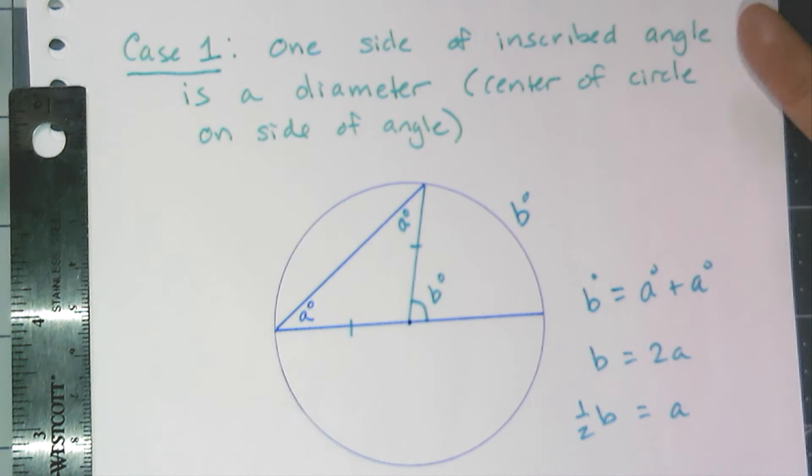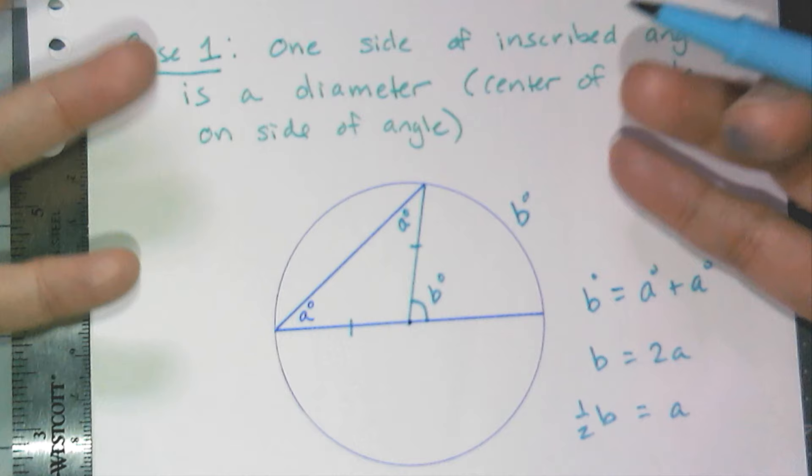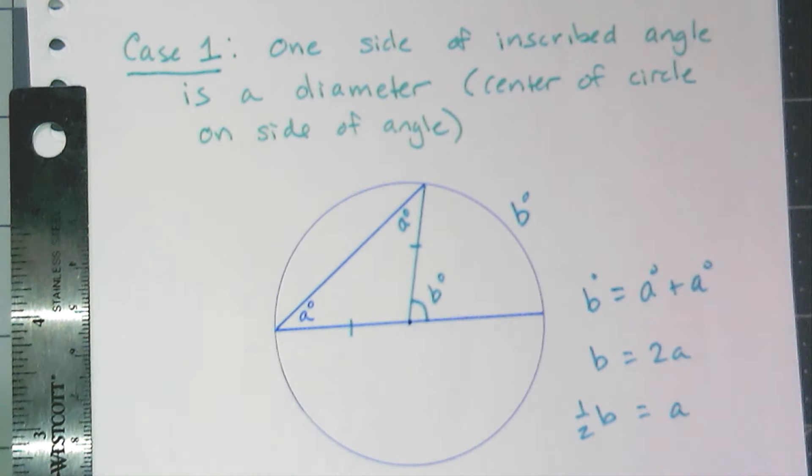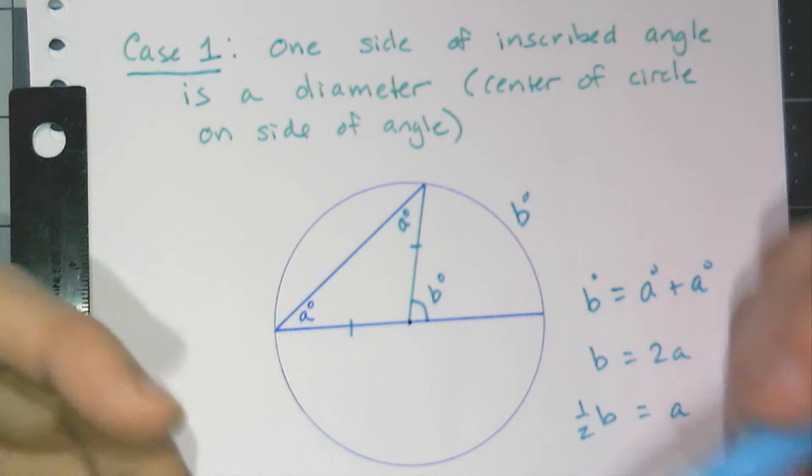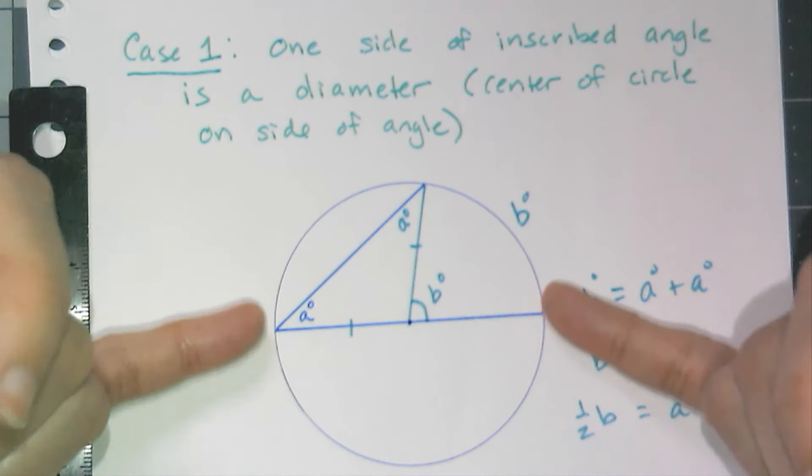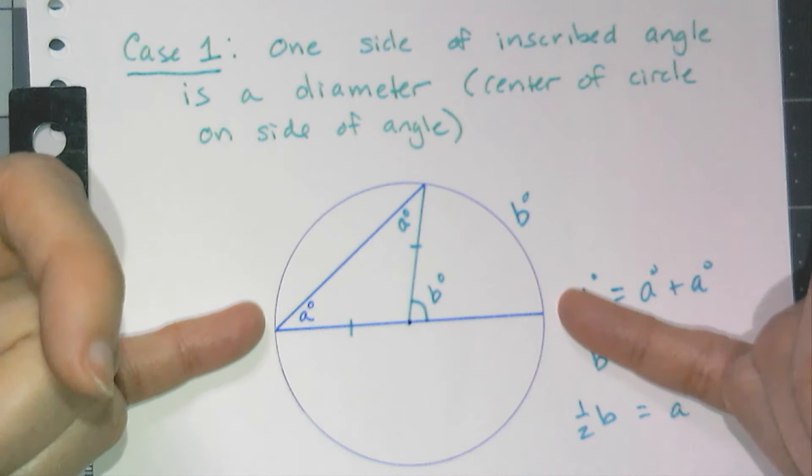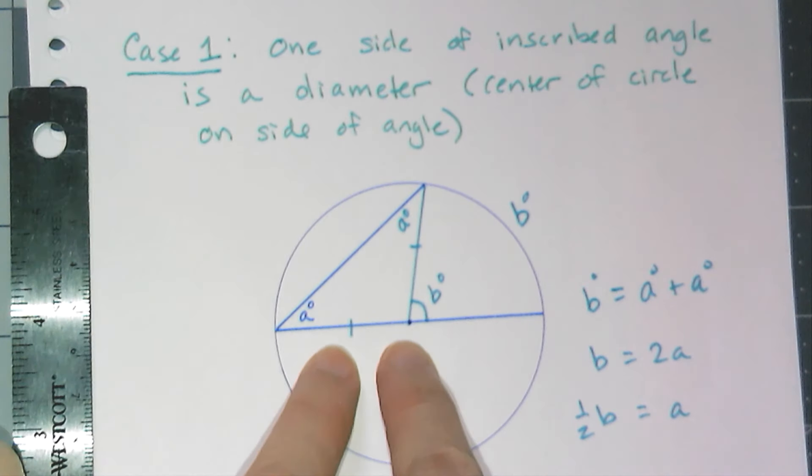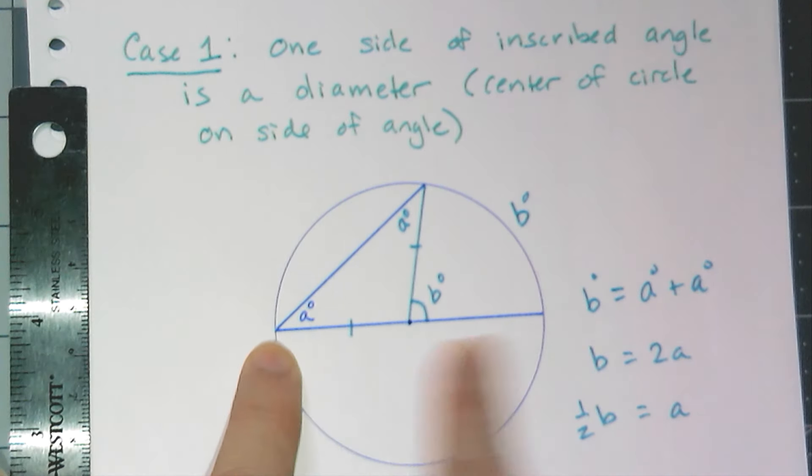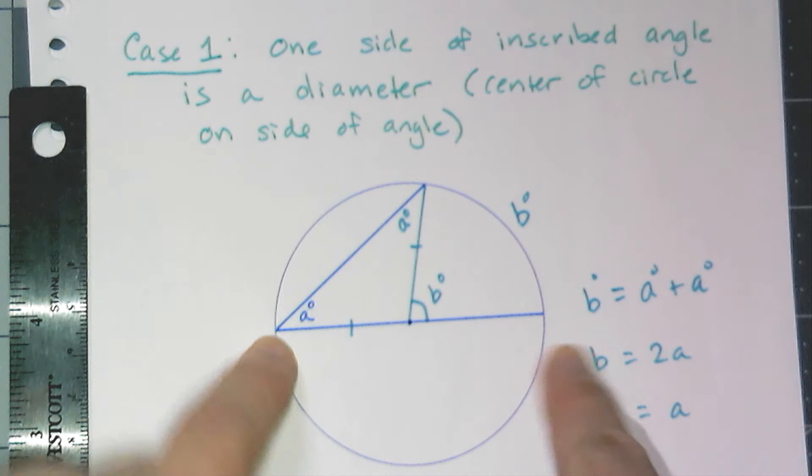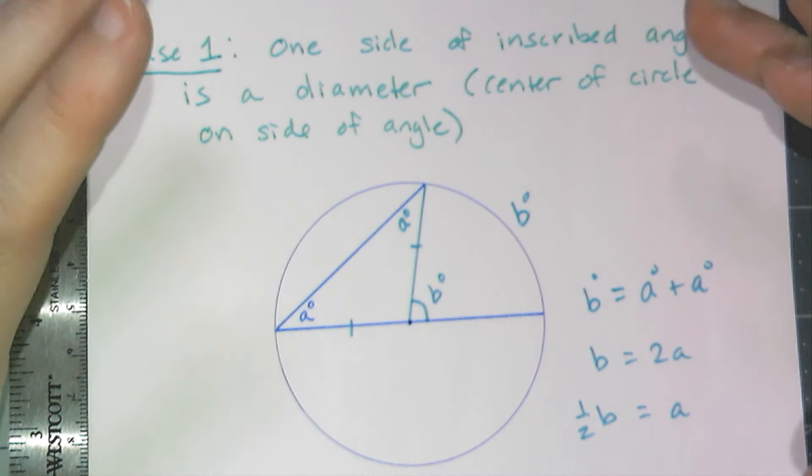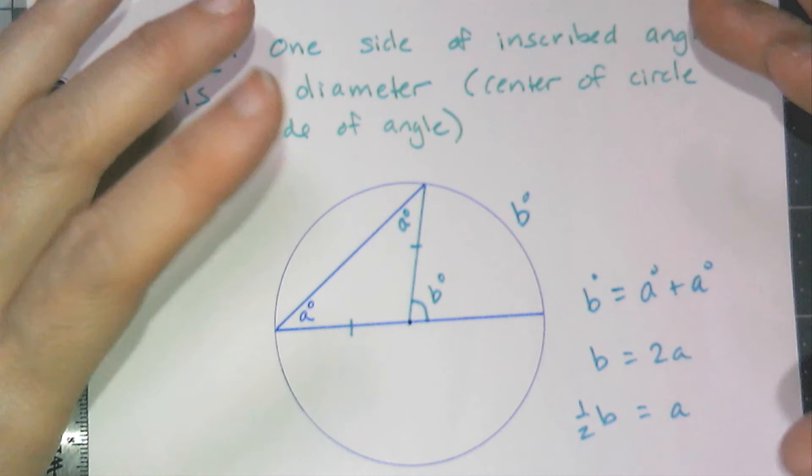Now, yay! But do all inscribed angles have the center on the side of one of the angles? And the answer to that is no. So this, even though this is really relatively simple to prove, it doesn't prove it for all inscribed angles. It only proves it for the very specific case where the center is on the side, right? Where one of the sides of the angle is the diameter. So that actually tells me how to split up my proof. So this proof of this conjecture, if I were to write it, has three parts. One little proof of just case one.